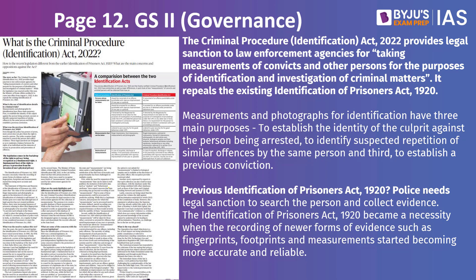Now even the smallest offenses will mean that your record will be kept with the government for 75 years. The purposes of doing this are: number one, to identify the culprit against the person arrested; second, to identify suspected repetition of any offenses; and third, to establish whether or not you had earlier committed the same crime.